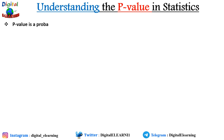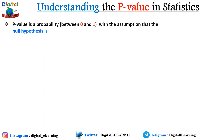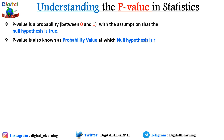The p-value is the probability — a number between zero and one — calculated under the assumption that the null hypothesis is true. The p-value is evidence against a null hypothesis. In statistics, the p-value is also known as the probability value. It is the smallest level of significance at which the null hypothesis is rejected.